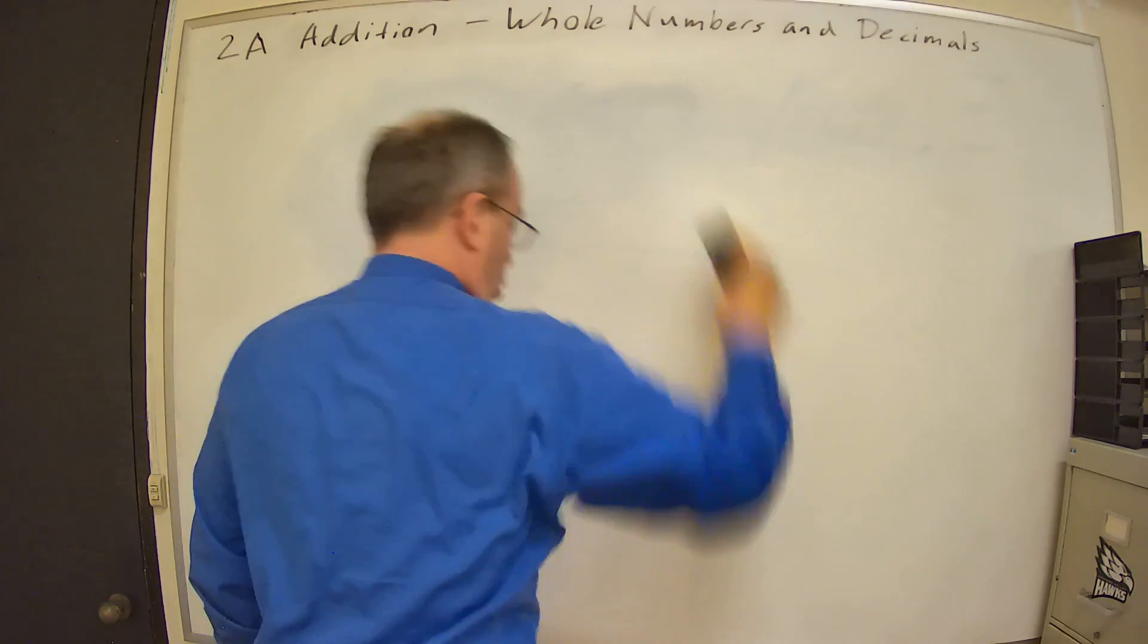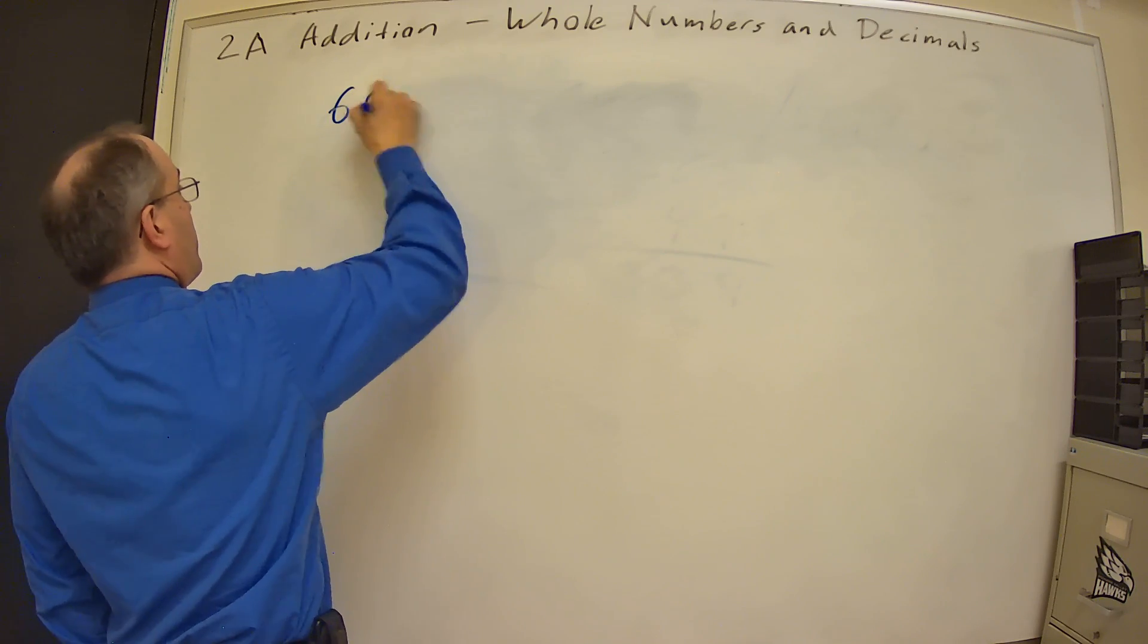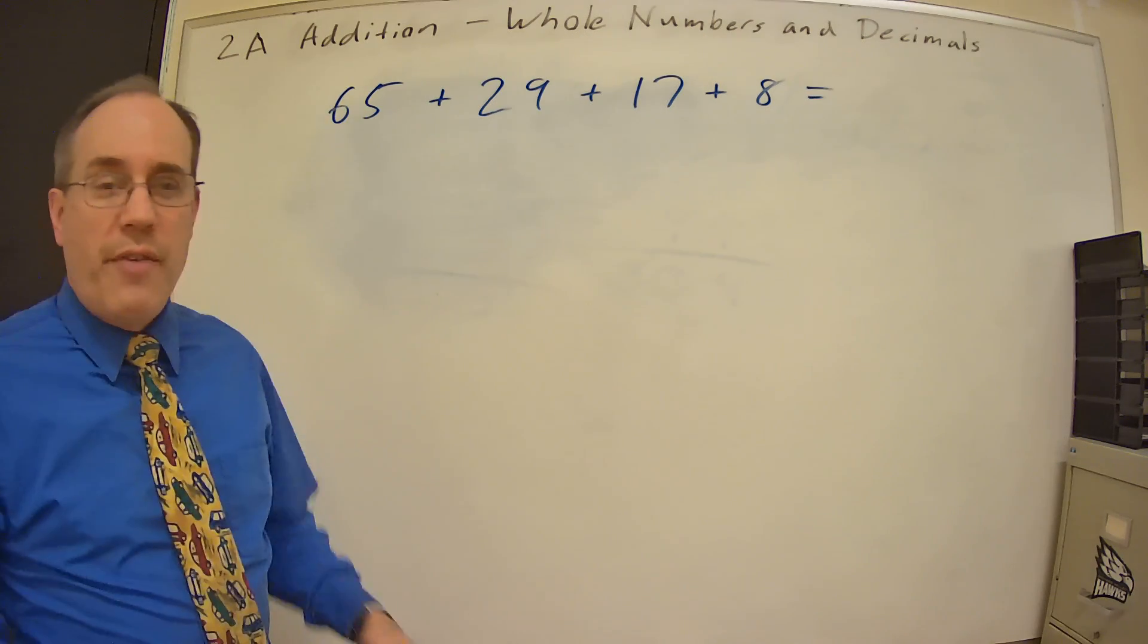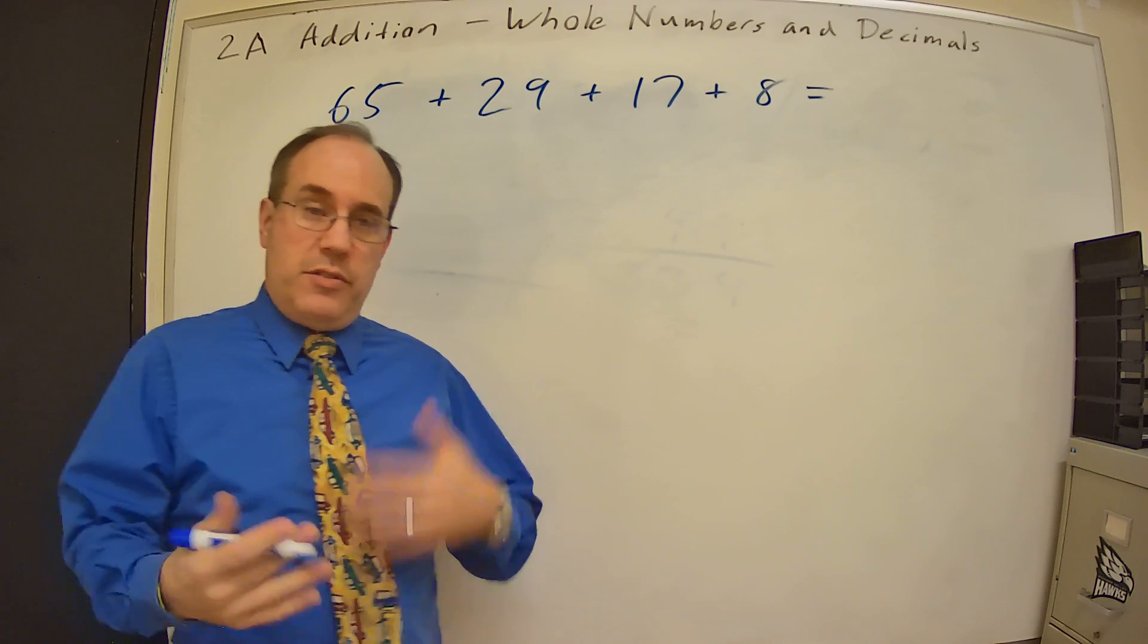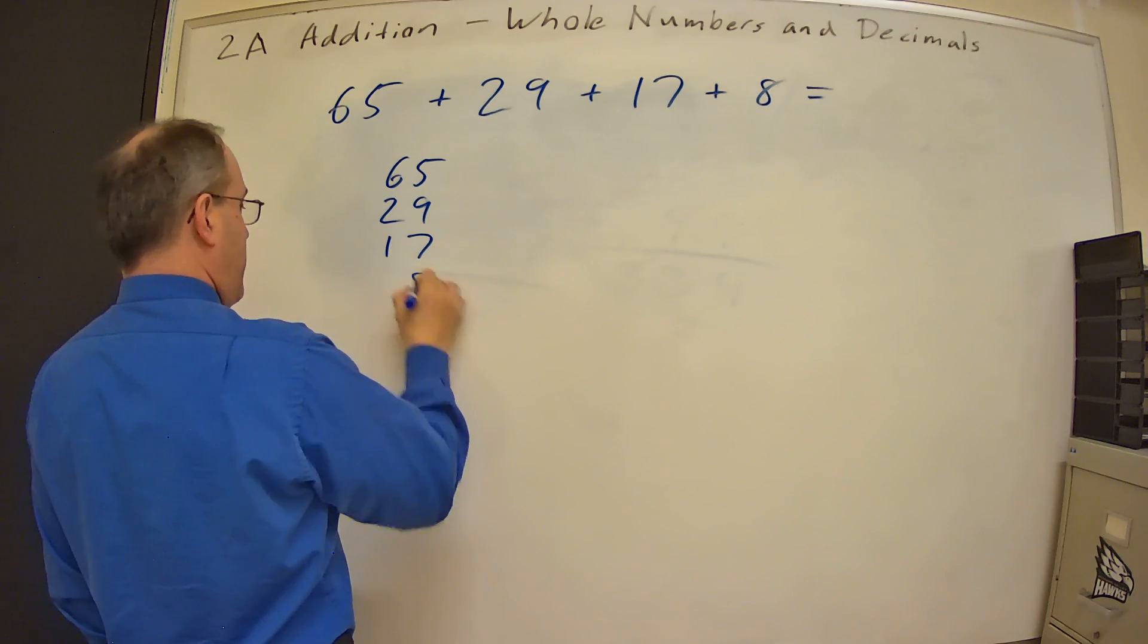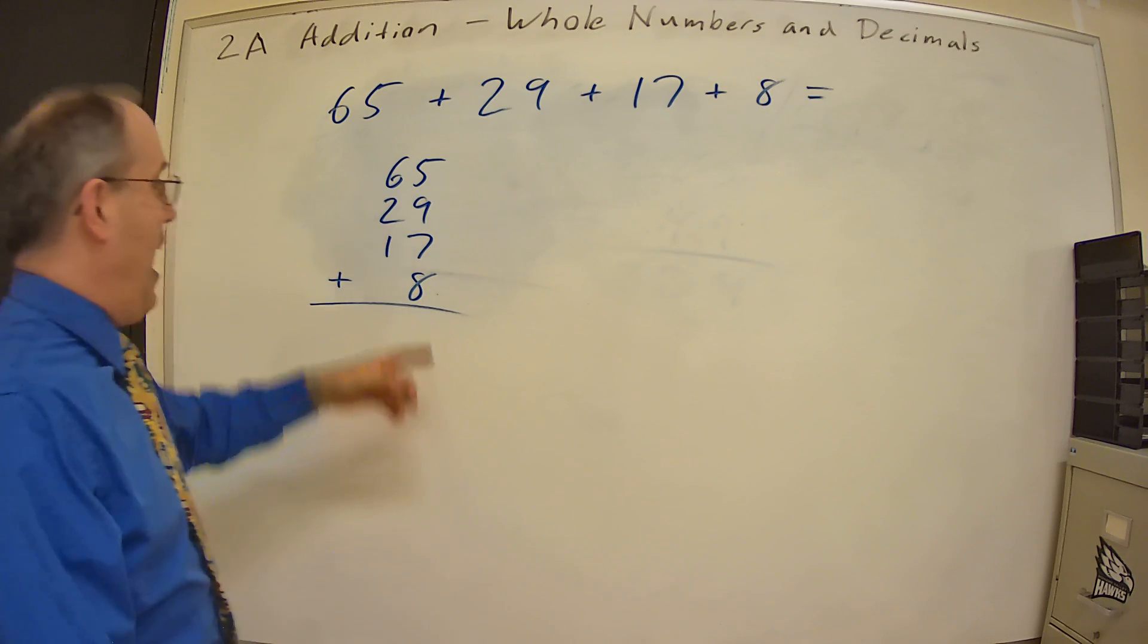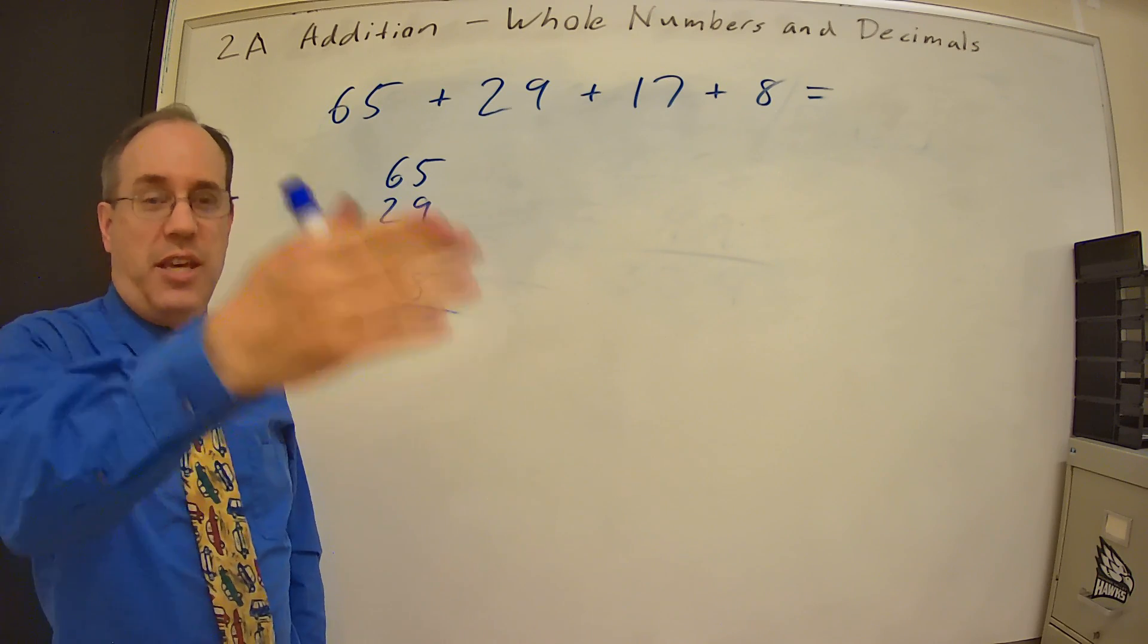So the final thing I want to cover here is what if we have more than two numbers that we're adding? 65 plus 29 plus 17 plus 8 equals. So now I've got four numbers that I'm adding together. Well, the process stays the same. We're just going to do a little bit more work with it. So still I'm going to stack them. 65, 29, 17, 8 plus. Okay, so now I've got these numbers. I've got the ones places lined up, the tens places lined up. So now we're just going to do the same thing. We're going to add this whole column. And we're going to do it one number at a time. We're just going to keep adding a new number to it.